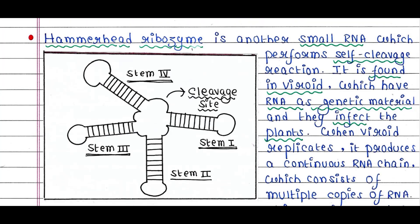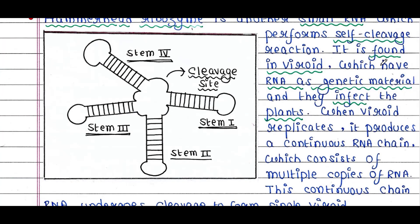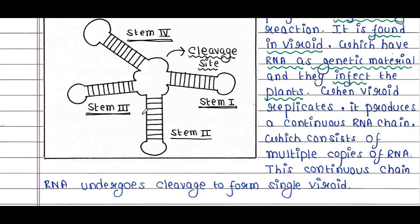Hammerhead ribozyme is another small RNA which performs self-cleavage reactions. It is found in viroids, which have RNA as genetic material and infect plants. When a viroid replicates, it produces a continuous RNA chain consisting of multiple copies of RNA. This continuous chain undergoes cleavage to form single viroid units at the cleavage site.